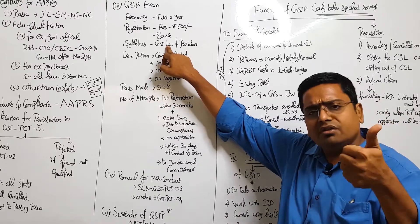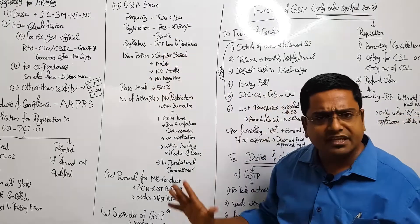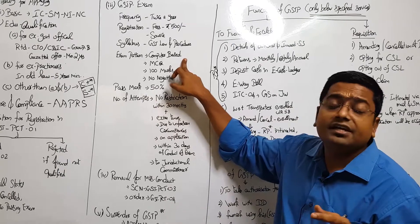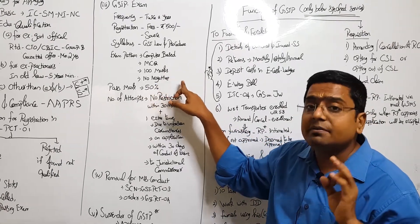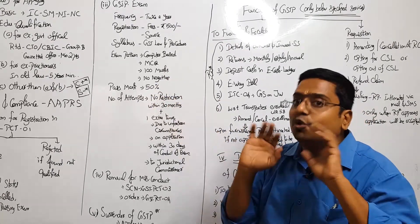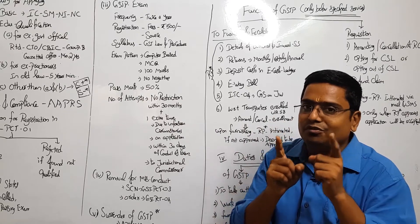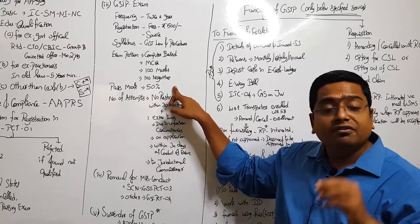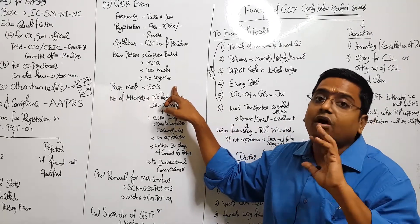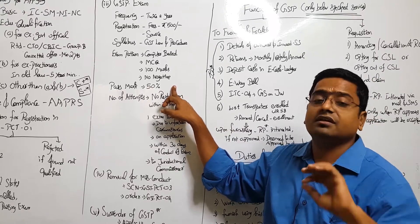The syllabus is entire GST law and procedures - CGST, SGST, IGST, UTGST, notifications, orders, circulars - everything is forming part of the syllabus. And it's a computer-based hundred mark MCQ paper, of which no negative mark is there. That's one thing which you have to appreciate. And 50 marks is a pass mark.